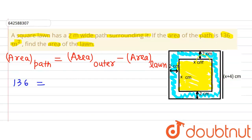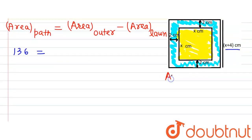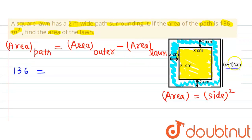So 136 equals area of outer square minus area of lawn. If I assume the side of the inner square to be x, then there is two meters above and two meters below. So the side of the outer square will be x plus 2 plus 2, which gives us x plus 4. The area of the outer square is (x+4)², and the area of the lawn is x².